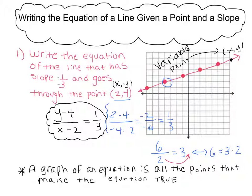Likewise, I could multiply both sides of this equation by x minus 2. And that will just leave the y minus 4 by itself. And so then I have y minus 4 equals 1 third times x minus 2.